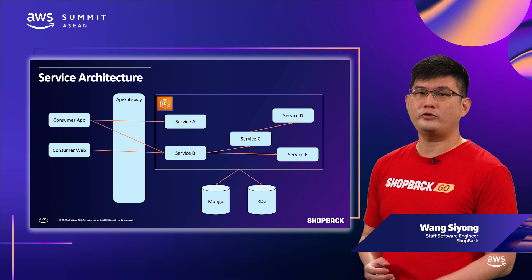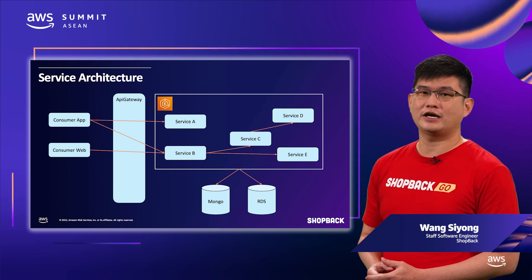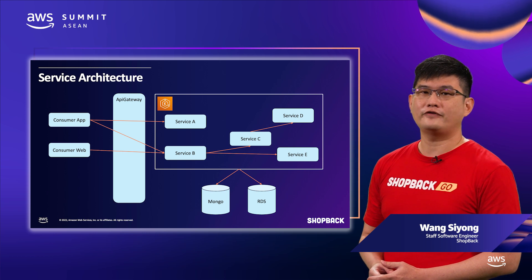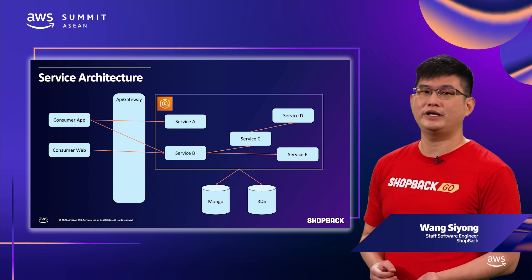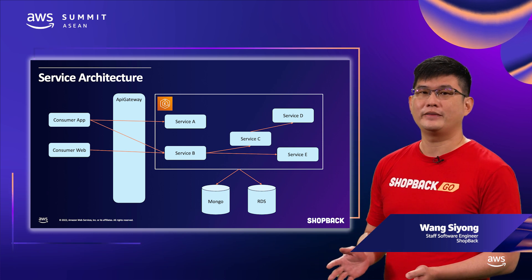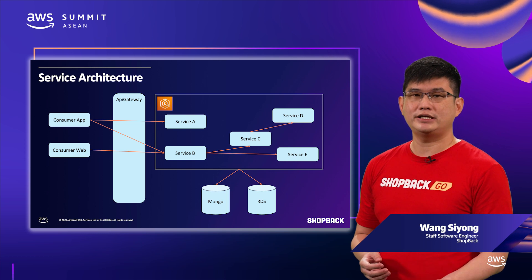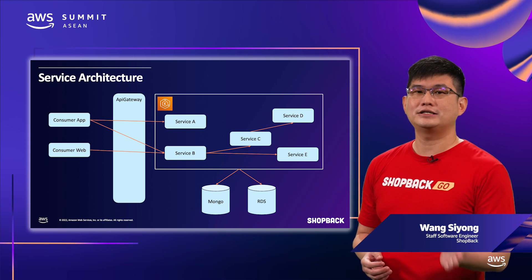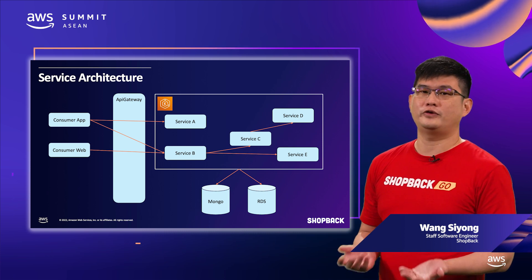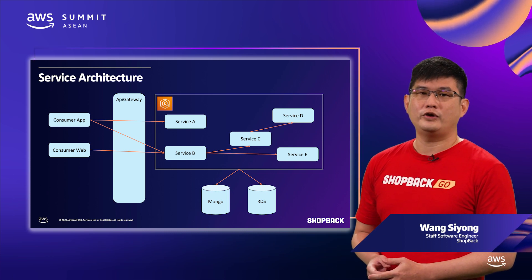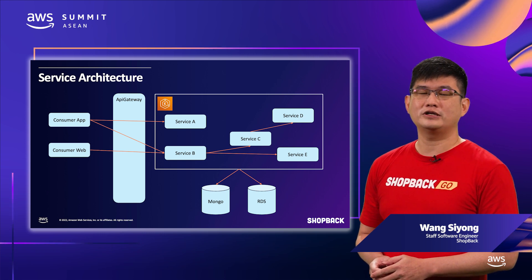When we were designing the system for ShopBack Pay, most of our existing microservices were running HTTP endpoints behind an API gateway with requests processed synchronously. A request could call another service and potentially another service in order to fulfill the caller's request. With each layer, reliability drops due to network or service failure.